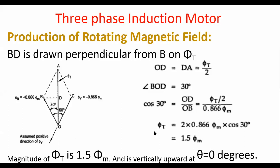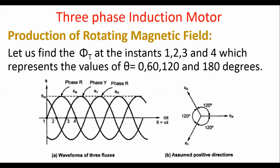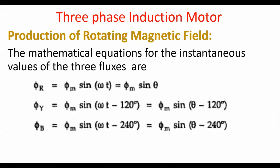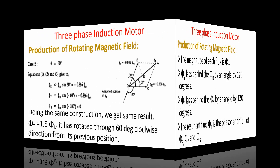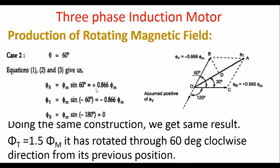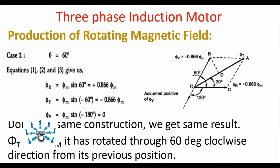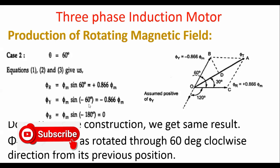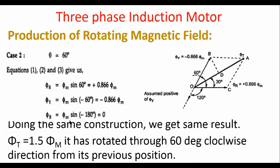Case 2: when θ = 60°, substituting gives φR = φm sin(60°) = +0.866 φm; φY = φm sin(60° − 120°) = φm sin(−60°) = −0.866 φm; and φB = φm sin(60° − 240°) = φm sin(−180°) = 0. So φB is zero, φR is positive, and φY is negative.